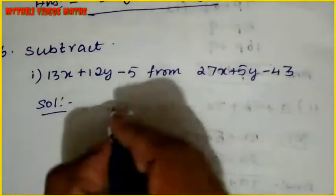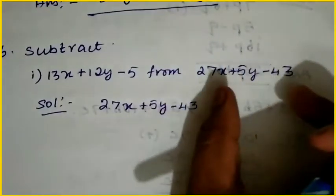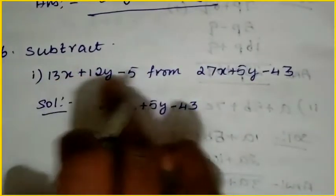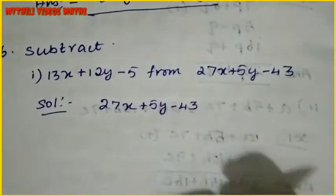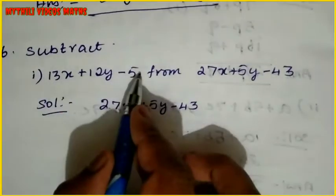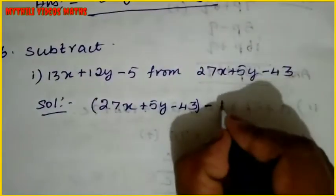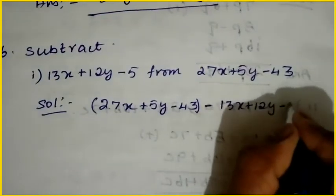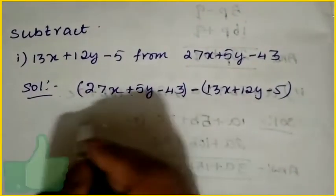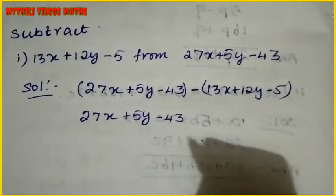See how to write this. The first algebraic expression, just write out as it is: 27x plus 5y minus 43. Then we are subtracting the 2nd algebraic expression from the 1st. We change the signs of the 2nd algebraic expression's symbols when we do this subtraction.